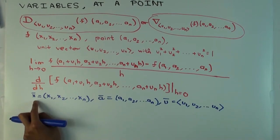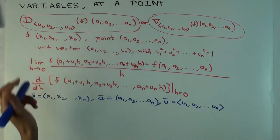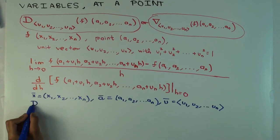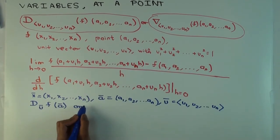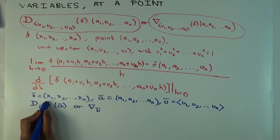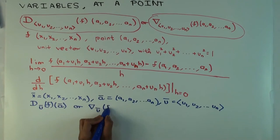Now with this notation, this thing becomes Dᵤ of f at ā, or ∇ᵤ of f at ā. So what will it be now as a limit? So here, what should come here?